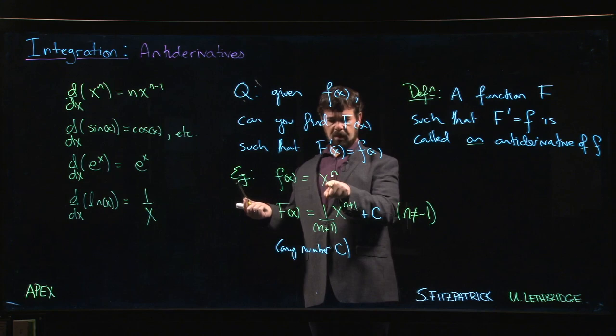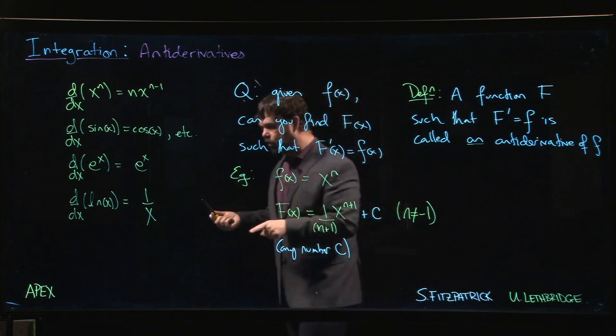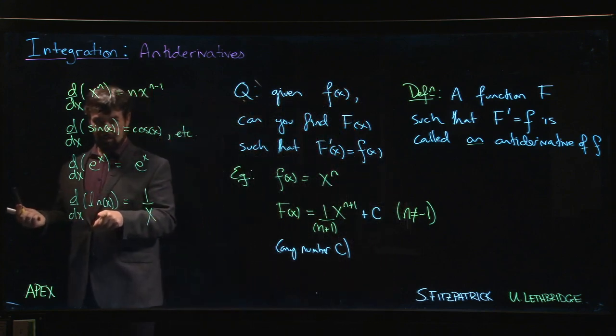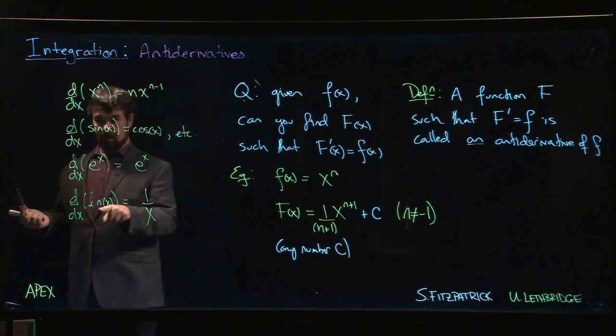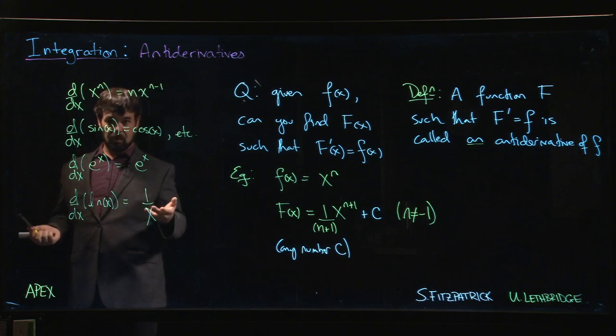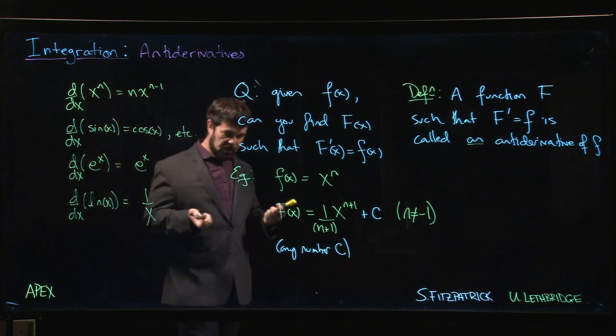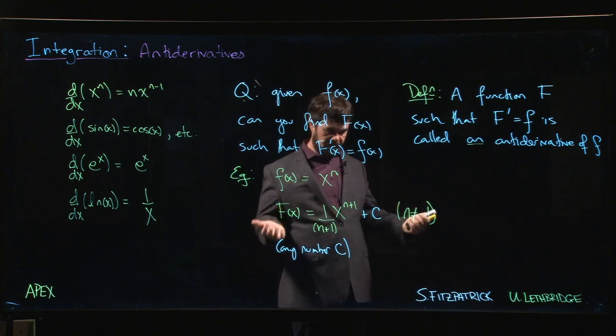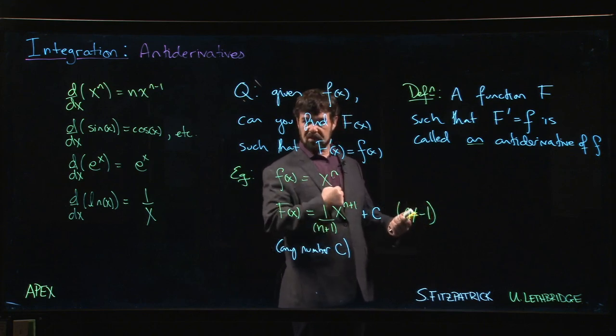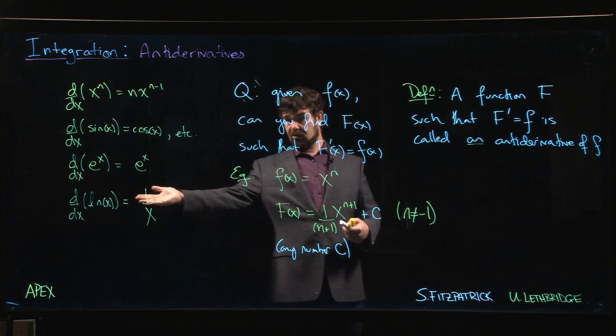But if n is equal to minus one we have x to the minus one, one over x. Oh, we know what the answer should be in that case. The antiderivative of one over x is the natural log, because the derivative of the natural log is one over x. So we do in principle know how to find the antiderivative of any power function. There's one missing piece of the puzzle, but the natural log fills in the gap, so we're happy with that.